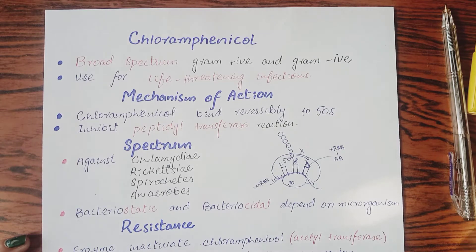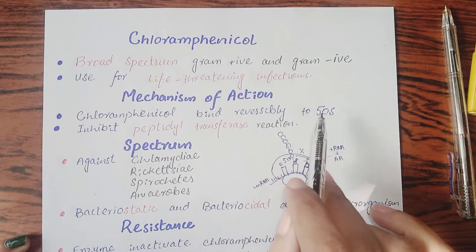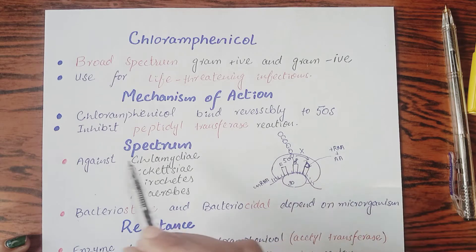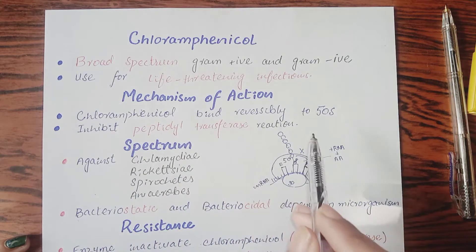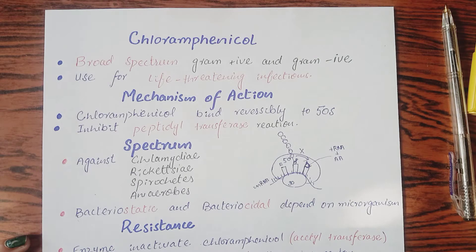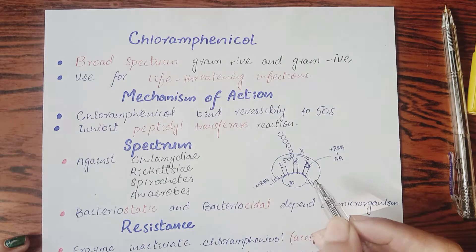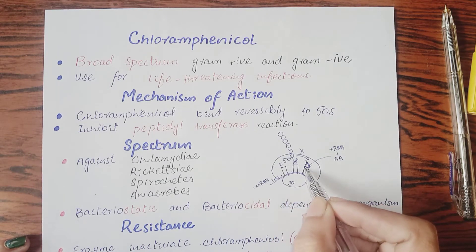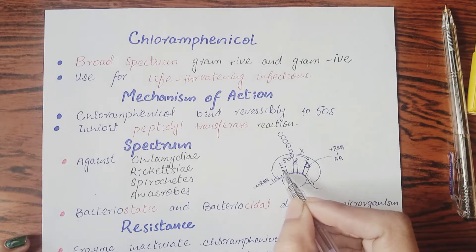Moving to mechanism of action: chloramphenicol binds reversibly to the 50S subunit — the larger subunit of the ribosome — and inhibits the peptidyl transferase reaction. The peptidyl transferase reaction is what forms peptide bonds and creates a protein strand. The ribosome has a 30S subunit and a 50S subunit, with an A site, P site, and E site.